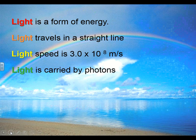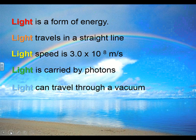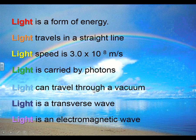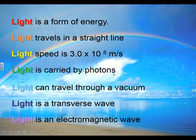Light is carried by little packets of energy which we call photons — that's a vocabulary word you'll need to know. It can travel through a vacuum, so it doesn't require a medium, which makes it a transverse wave in that it vibrates perpendicular to the direction it's traveling. It's also an electromagnetic wave in the fact that it can travel through a vacuum.